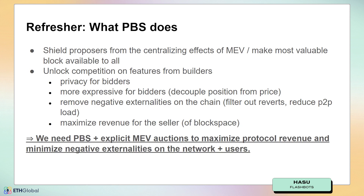PBS maximizes revenue for the seller, and we can see this map one-to-one to the problems that we laid out earlier — PBS solves them all. So we need PBS and explicit MEV auctions to maximize protocol revenue and minimize negative externalities on these layer two networks and their users.